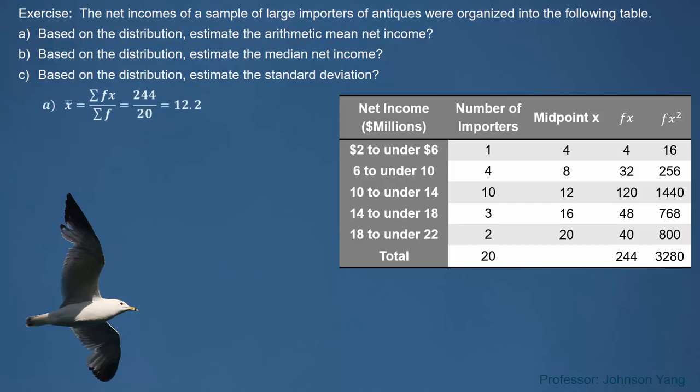After we have the extended table done, we have three key totals at the bottom: total frequency, total of frequency multiplied by midpoint, and total of frequency multiplied by midpoint squared. We can easily get the mean — 12.2 — by dividing 244 by 20.